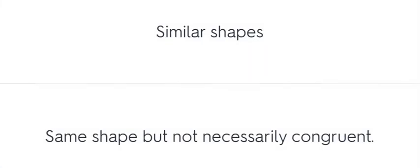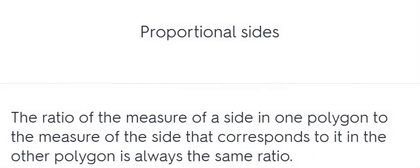Similar shapes. Same shape but not necessarily congruent. Proportional sides. The ratio of the measure of a side in one polygon to the measure of the side that corresponds to it in the other polygon is always the same ratio.